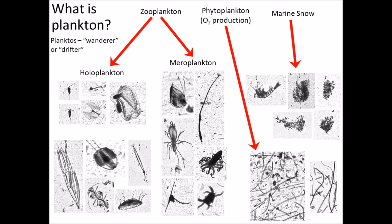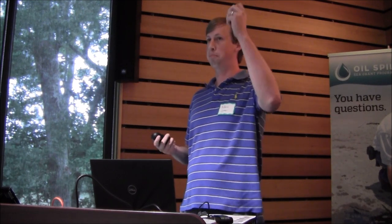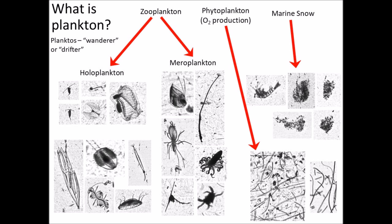So what is plankton? The word comes from a Greek word meaning wanderer or drifter. These are animals or plants or plant cells that cannot swim against the prevailing currents — they are at the mercy of the currents, with only limited ability to migrate vertically. There are three groups: phytoplankton, which are the powerhouse of ocean life, converting carbon dioxide into usable compounds and producing approximately half the oxygen in our atmosphere; zooplankton, which are all the animal plankton; and marine snow, a catch-all category of detrital dead or decaying material with biological origin that sinks through the water column.